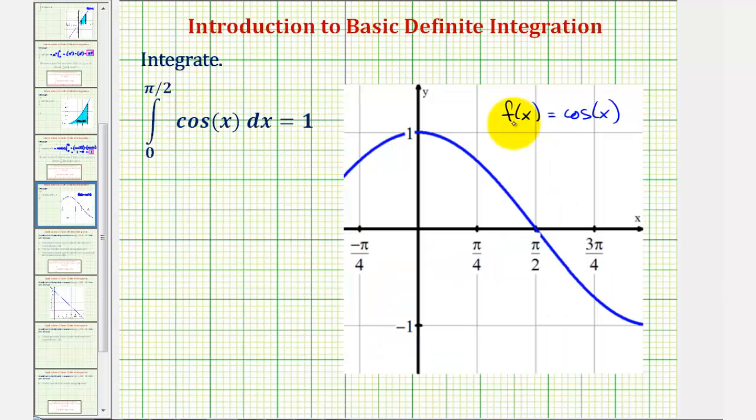Let's take a look. Here's a graph of f of x equals cosine x, the integrand function. If we shade the area under the function above the x-axis over the interval from zero to pi over two, this would be the area, and this area is exactly equal to one square unit, the same value as this definite integral. I hope you found this helpful.